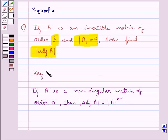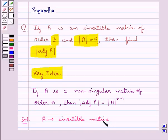This is the key idea that we use for this question. Let's proceed with the solution now. We are given that A is an invertible matrix, and we know that a square matrix A is invertible if and only if it is a non-singular matrix.